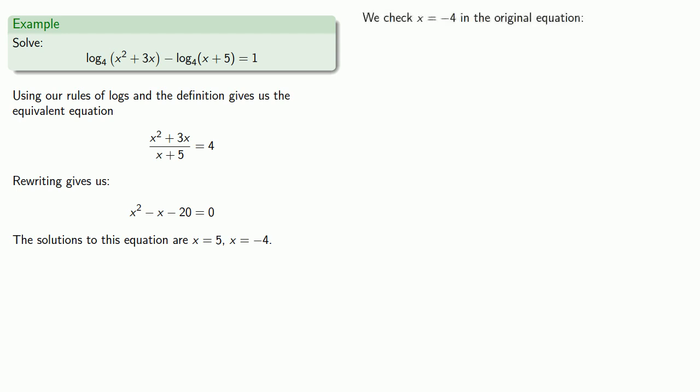We check x equals minus 4 in the original equation and ask ourselves, is it true that log base 4 of x squared plus 3x minus log base 4 of x plus 5 equals 1? So we'll substitute in our values of x and do a little bit of arithmetic simplification.